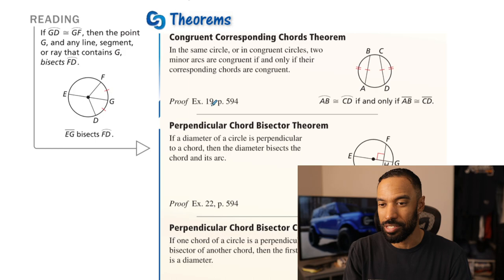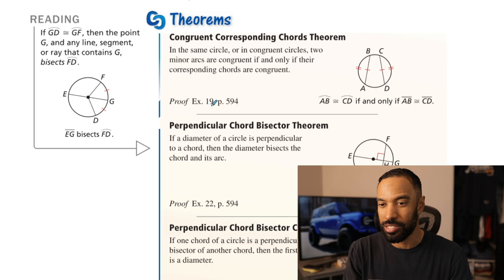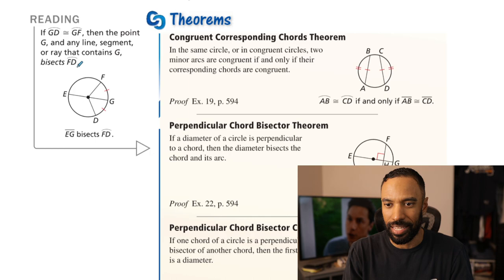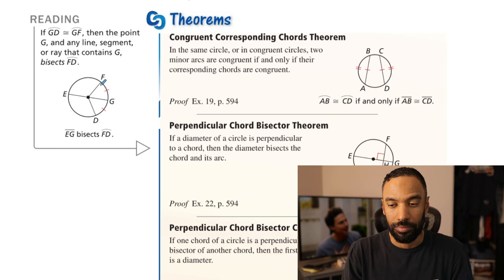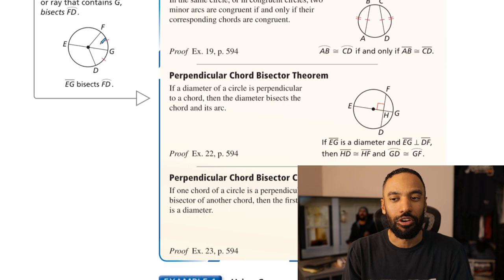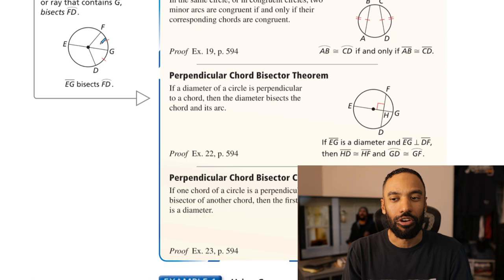There's a proof — exercise 19 — so look at that. If arc GD is congruent to arc GF in this situation, then the point G and any line segment or ray that contains G bisects arc FD. EG bisects it, so you can have that bisection.